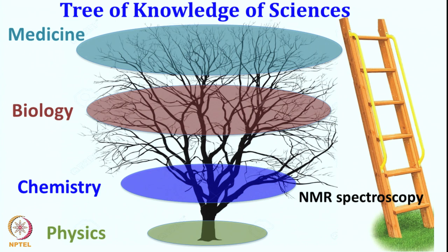If you look at the tree of knowledge of science, at the bottom in the root it is physics, then the branches are chemistry. There is more complexity as we move from physics to chemistry, and then when we move to biology, even more complex phenomena happen in science, and in medicine it is quite complicated science, so complexity increases.